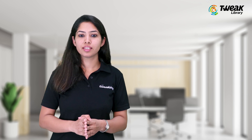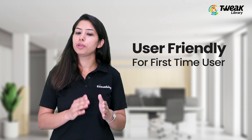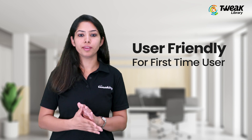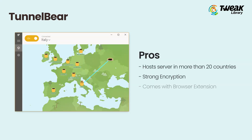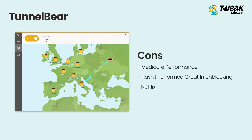Next on our list is Tunnelware. This is the best choice if you are a first-time user of VPN services as it is quite user friendly. It hosts servers in more than 20 countries and is able to route internet traffic to servers in countries like UK, USA and Germany. The VPN service is known to have strong encryption that keeps snoopers at bay, and its browser extension is also available along with torrenting services. However, it has a mediocre performance compared to others and hasn't performed great in unblocking Netflix.